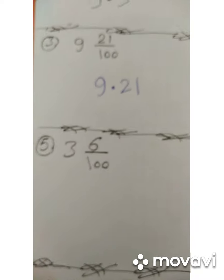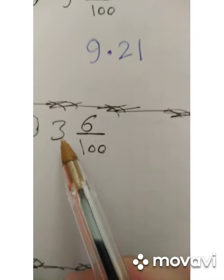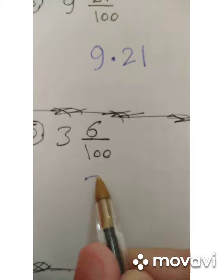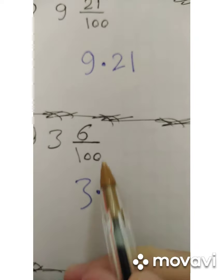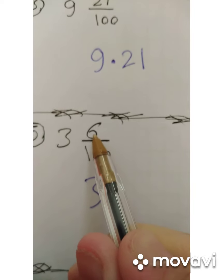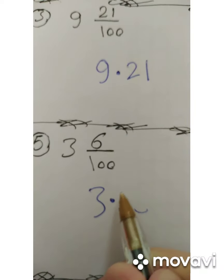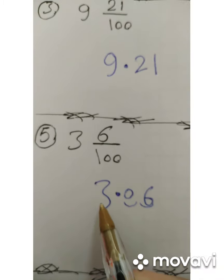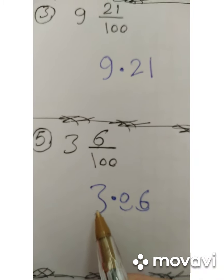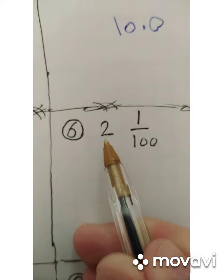Number five: three and six hundredths. The whole is three. Put the decimal point — pay attention, six hundredths means two digits after the decimal, but we only have six, so put zero then six. We read it as three and six hundredths. The next number is two and one hundredth. The whole is two — write two and put the decimal point.